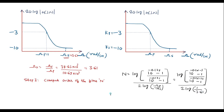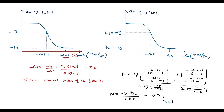Solving for the filter order n: the numerator gives minus 0.956 and the denominator gives minus 1.115, so n = 0.857. Therefore, rounding up, n equals 1. The order of the filter is 1.